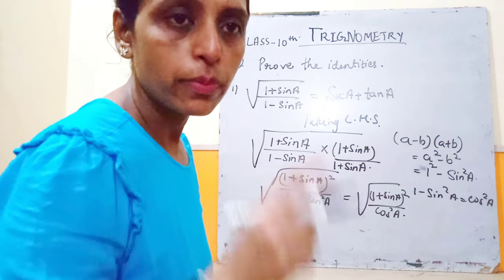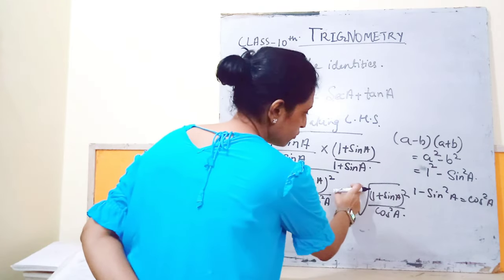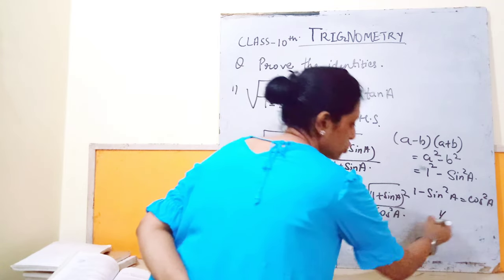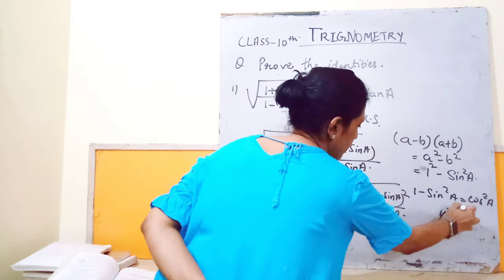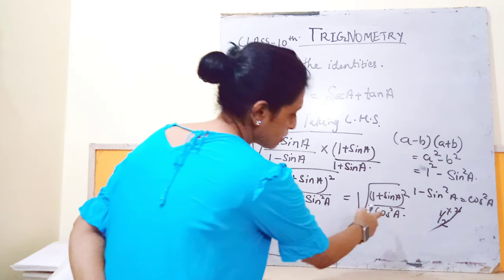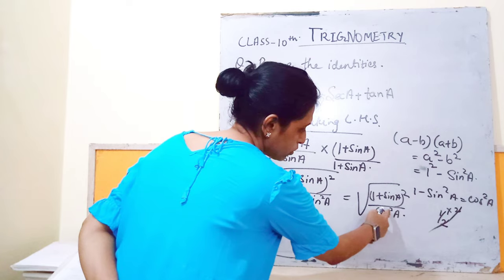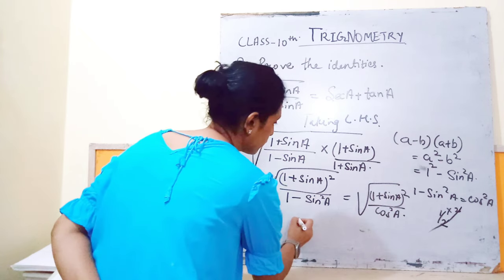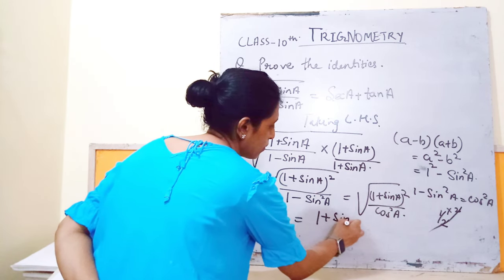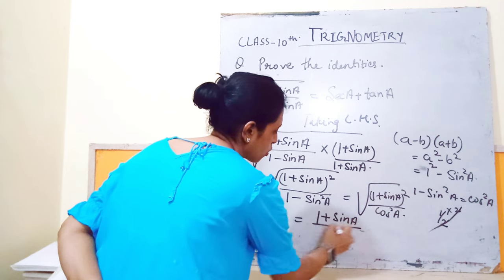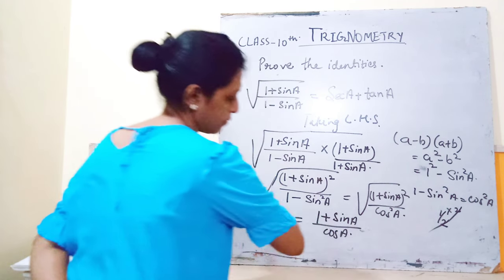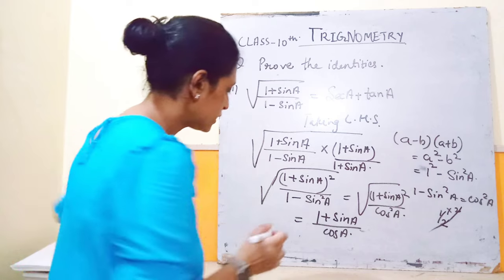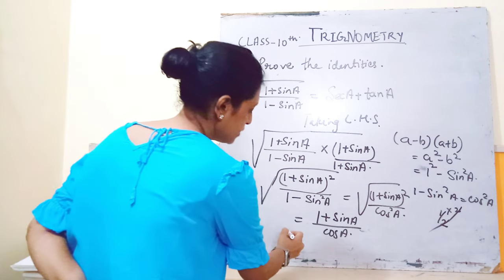The square root means to the power one-half. So this one-half and the square (power 2) in the numerator will get cancelled. Similarly in the denominator, the square will also get cancelled with the square root. So we get (1 + sinA) upon cosA.